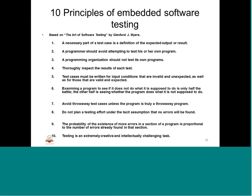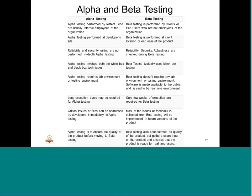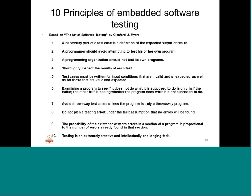Now for the last part of the session, some pointers highlighting the overall principles done by Glenford Myers. The first principle: a necessary part of a test case is the definition of the expected output. The second principle: the programmer should avoid attempting to test his or her own program - independence should be maintained. The third principle: the programming organization should not test its own programs - one is at the programmer level and another at the organization level.